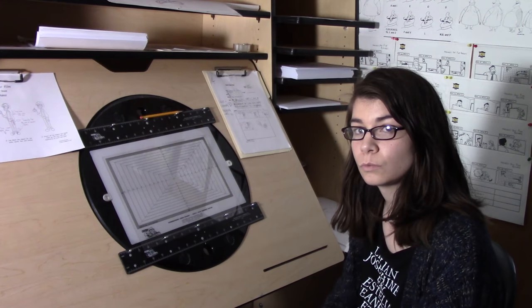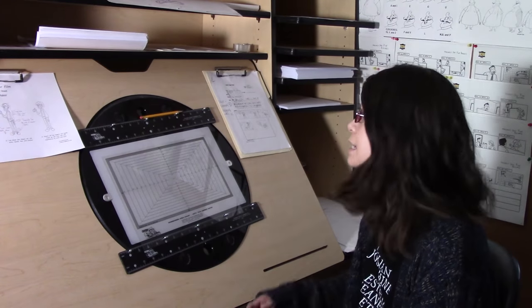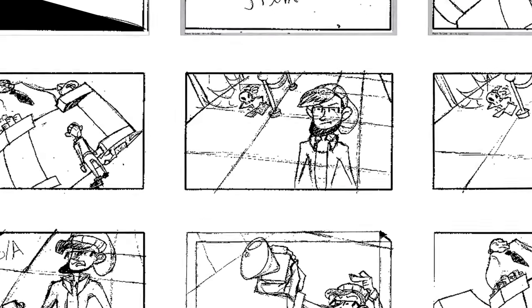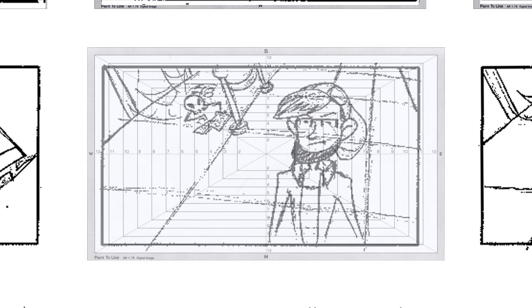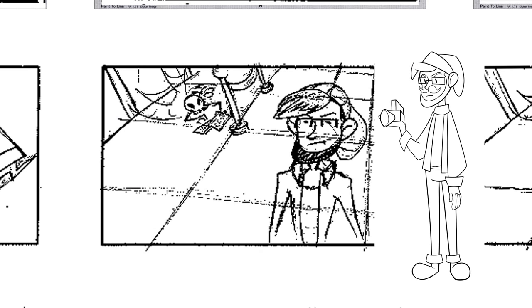In animation, we do layout, which is taking the storyboard and then we blow it up to the field guide and to the right size of the field guide. Doing that, we also make sure the character is on model.